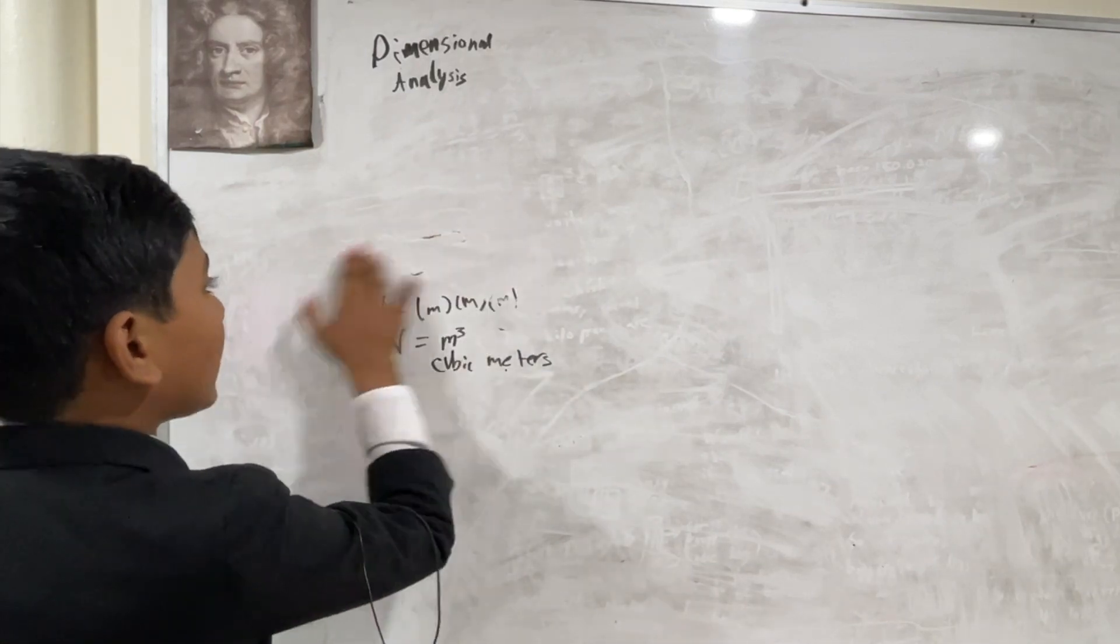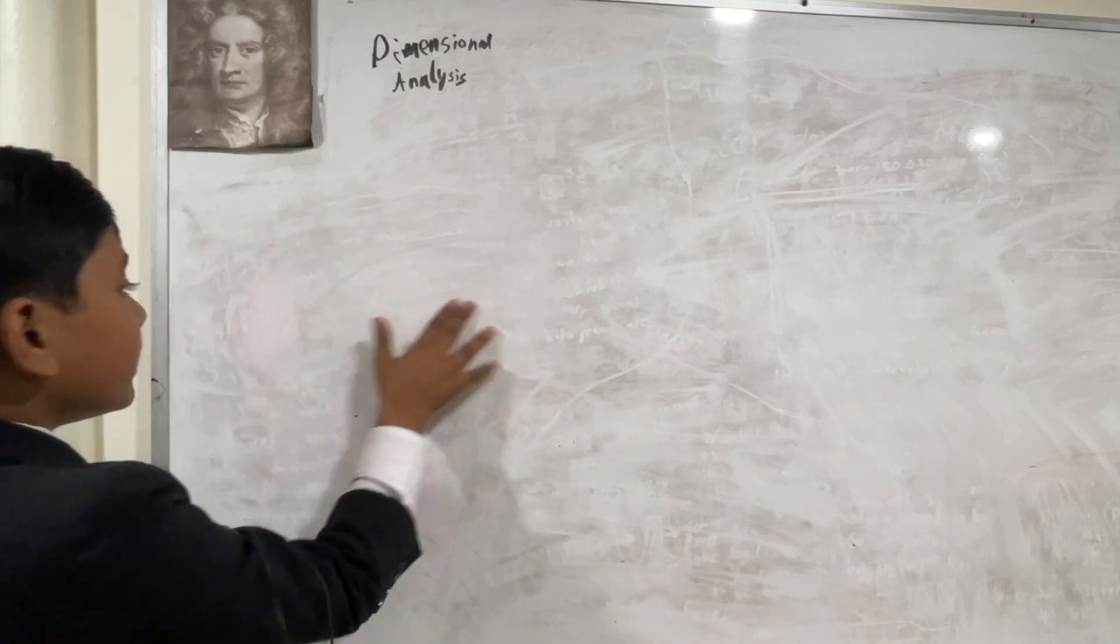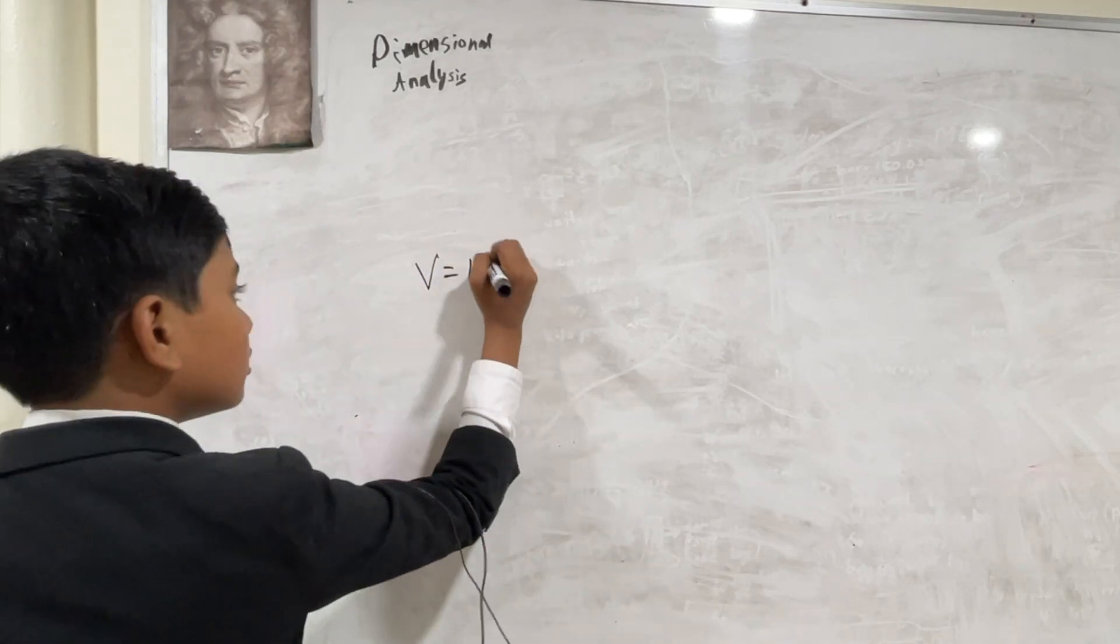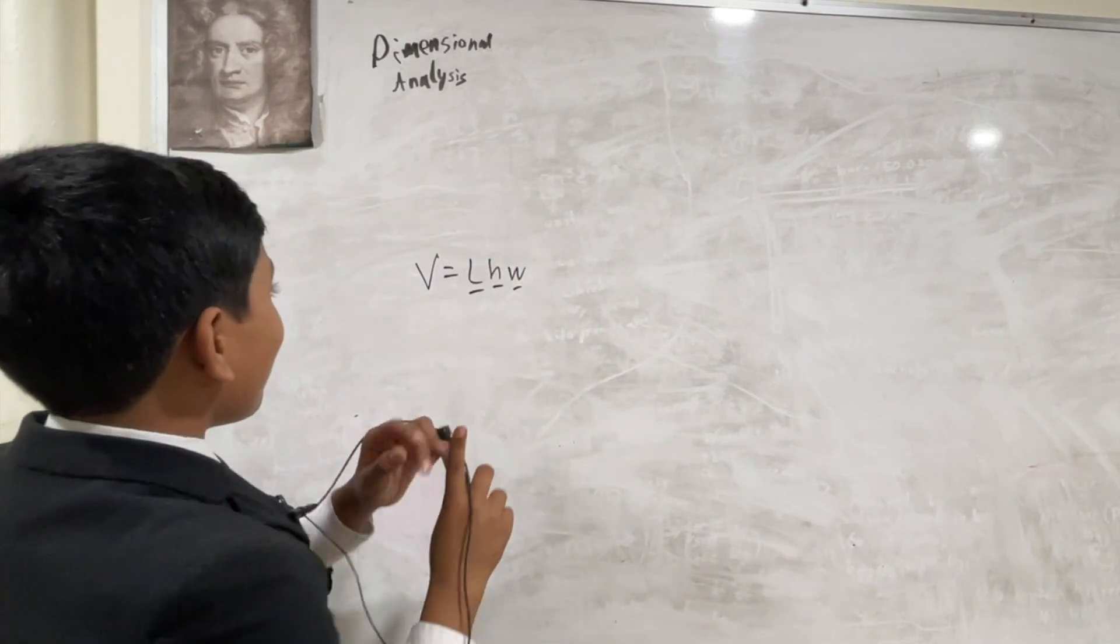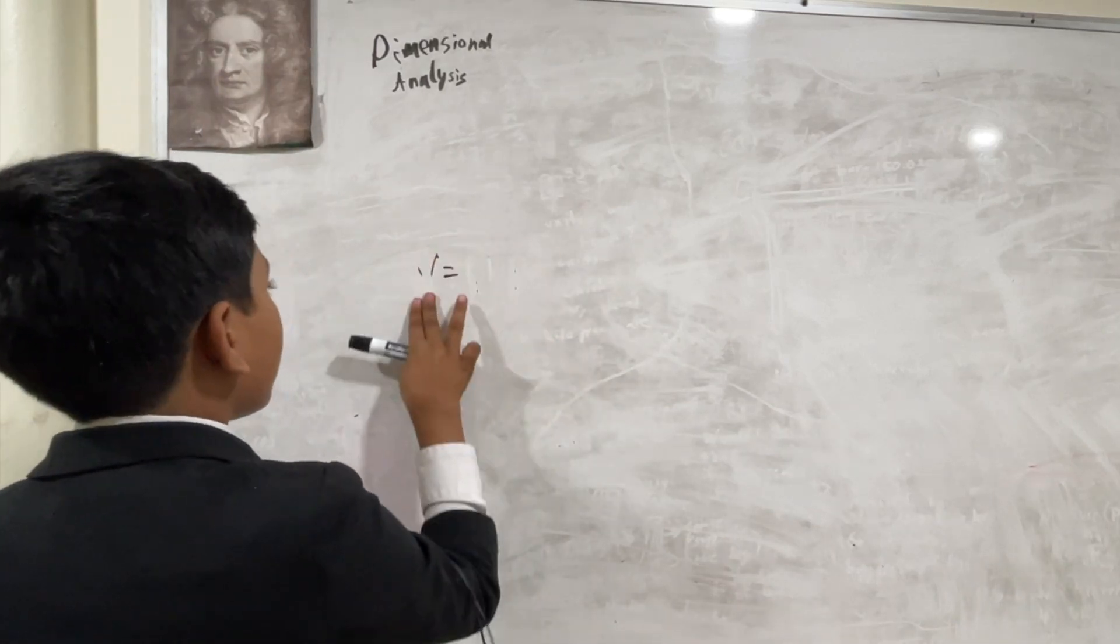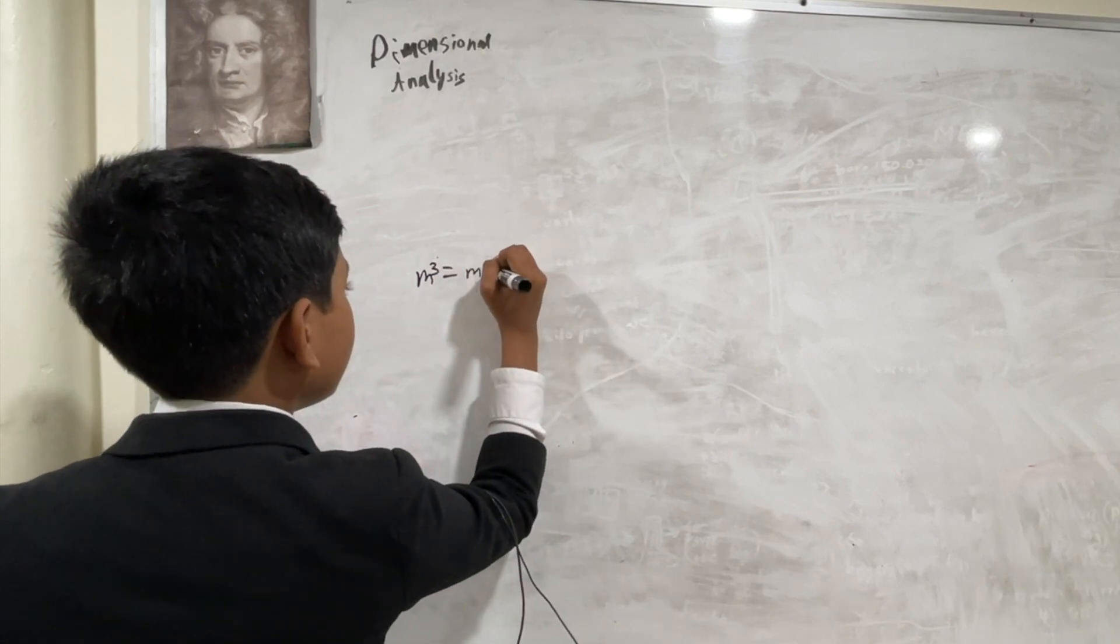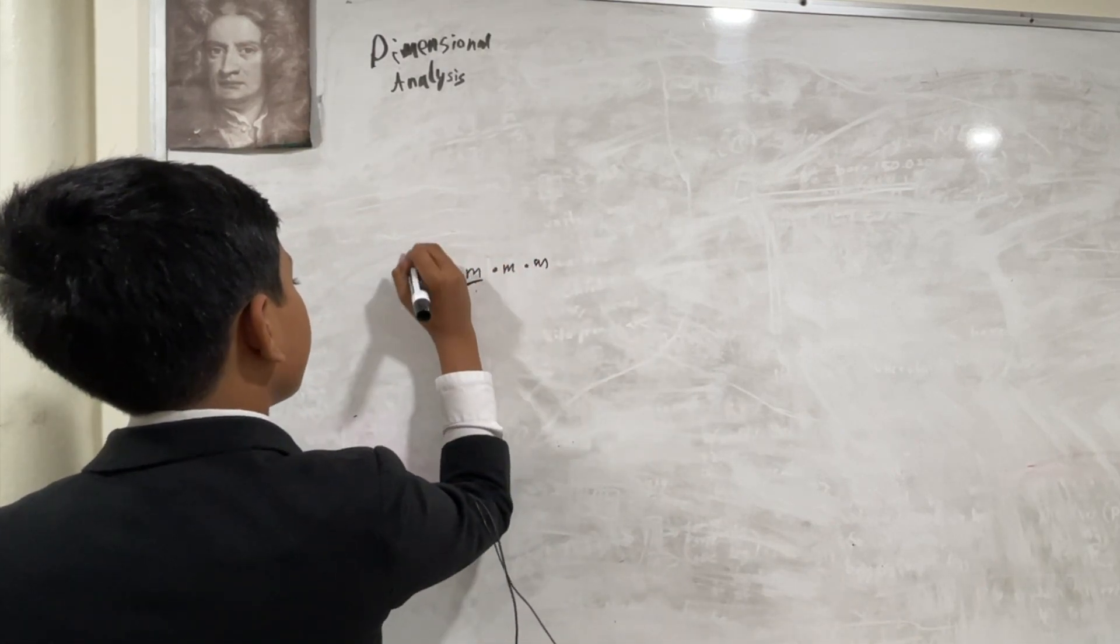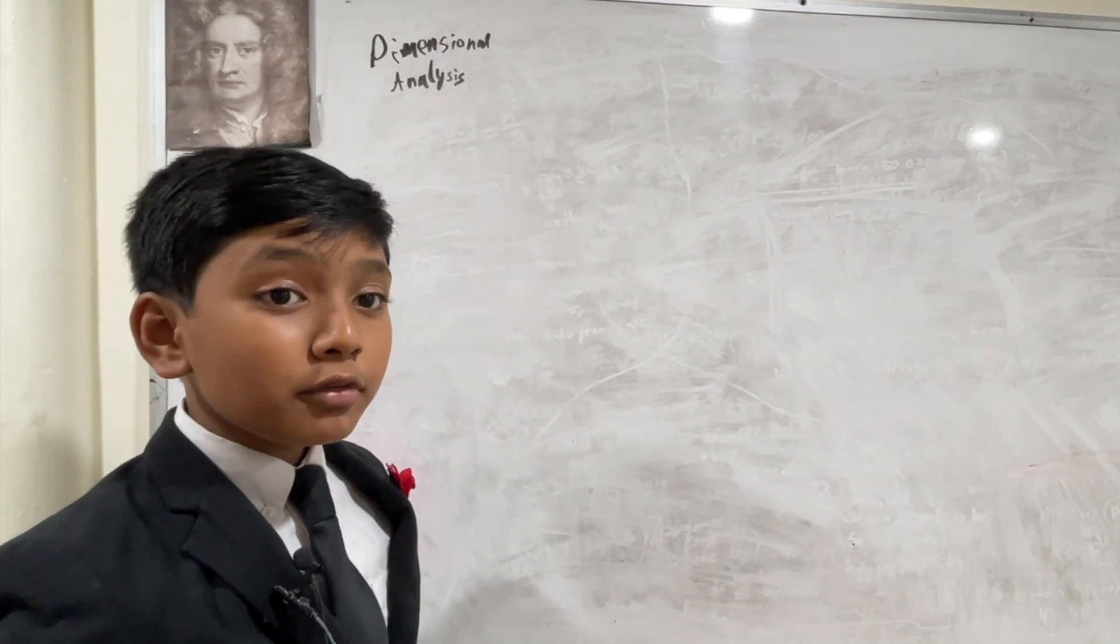So, what is dimensional analysis exactly? Well, usually, when working in formulas, you're working with the variables. Now, you're going to be working with the units inside those variables, not only fundamental, like the meter, but also derived, like the cubic meter. So, how are we going to do this?